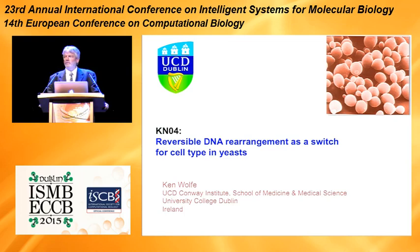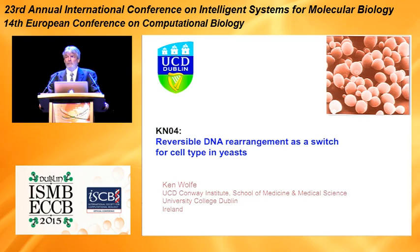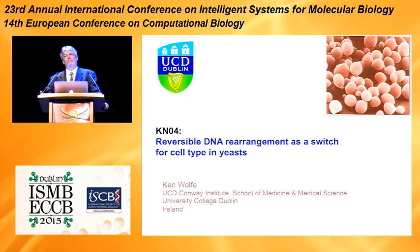Ken was a PhD student, I was a postdoc, and this was Paul Sharpe's first lab straight after he did his PhD. Ken did his PhD with Paul and also in collaboration with Wenxiong Li in Houston, Texas. From his PhD he got a couple of PNAS papers and a Nature paper, all first author, where they were looking at rates of evolution and clocks in different organisms. After his PhD he went to Indiana to do a postdoc with Jeff Palmer, where he worked on plant evolution for a while, and then came back to Dublin to Trinity College Dublin.